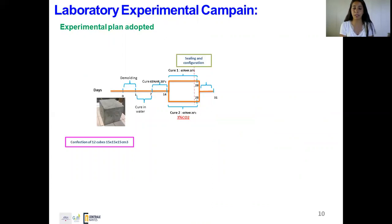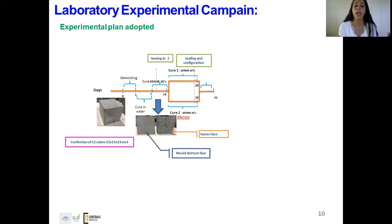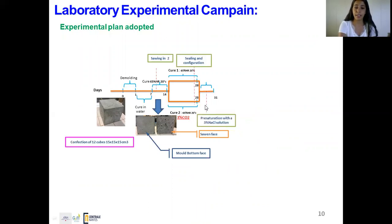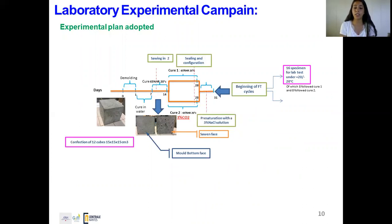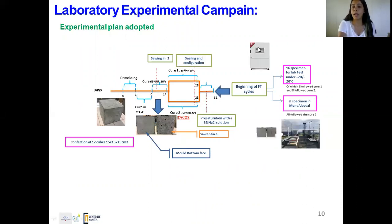We decided to carry out a laboratory experimental campaign, and here is the experimental plan adopted. After preparation of 15 cm cubes, we did demolding and curing in water until age 7 days, then curing in air at 65% relative humidity and 20°C. During this step, the cubes were sawn in two, giving two types of testing surface: either mold bottom face or sawn face. Some specimens continued curing in air; the other part were cured at 65% relative humidity, 20°C, with 3% CO2. This continued until age 28 days, followed by pre-saturation with a 3% NaCl solution until age 31 days, when freeze-thaw cycles began. 16 specimens were used for lab tests under +20/-20°C, and 8 specimens were placed at Mont-Égual.